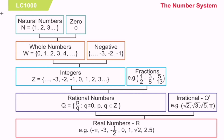But irrational numbers are actually non-terminating and non-repeating. An example of an irrational number is the square root of 2, which is equivalent in decimal to 1.414213862. So, it is non-terminating and non-repeating.